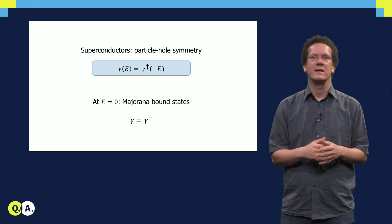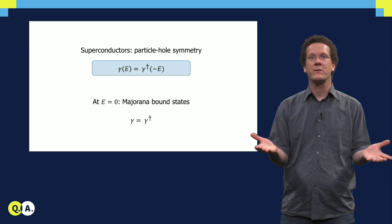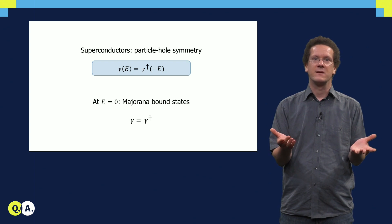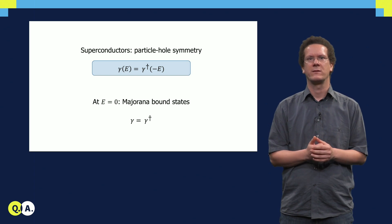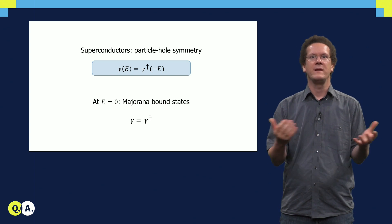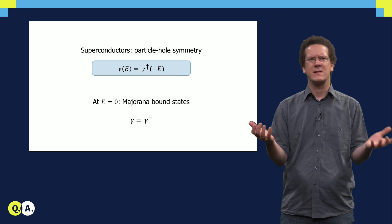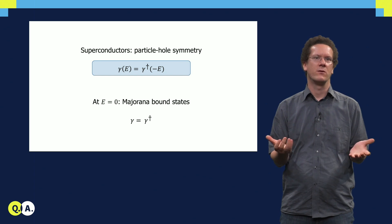For zero energy, we then immediately get Majorana bound states. In this case, the Majorana creation operator gamma dagger equals the annihilation operator gamma. So all we need to do is look for states in superconductors with zero energy.